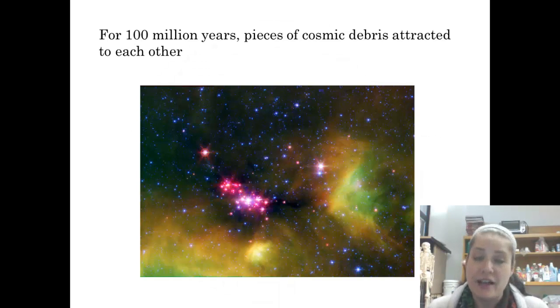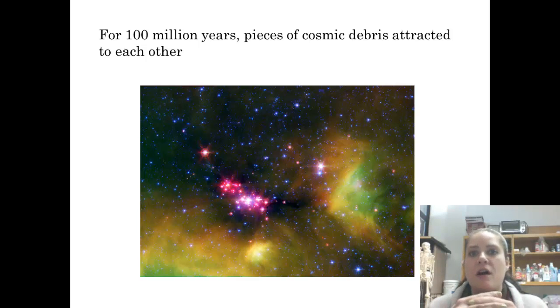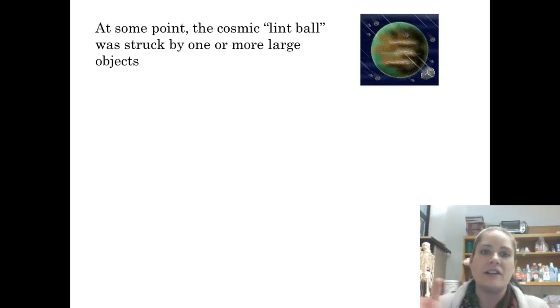So for 100 million years, there were these little pieces of cosmic debris, meaning just all of this little sort of junk out in space. And those pieces of cosmic debris attracted to each other. One of the things we know is that all objects attract to each other. There's a gravitational attraction between all objects. For 100 million years, all of these little pieces were attracted to each other, and they became this sort of, I call it a lint ball, a cosmic lint ball. So this great big cosmic lint ball was floating around in space, and it got hit by something. It got hit by something really big or a lot of something really bigs, but it got hit.